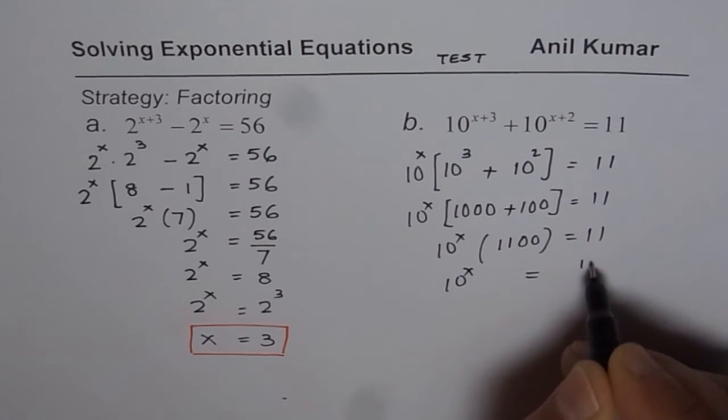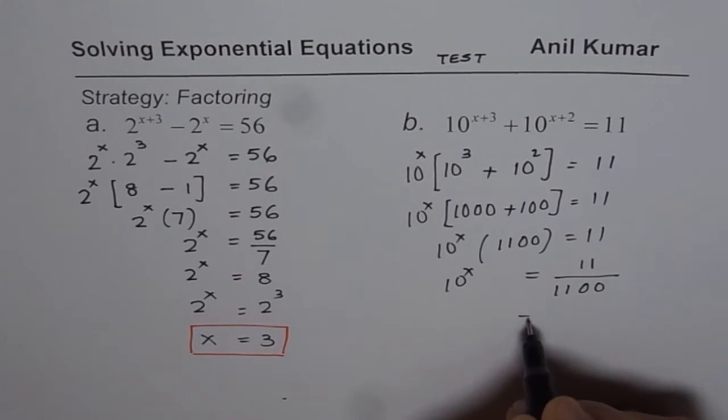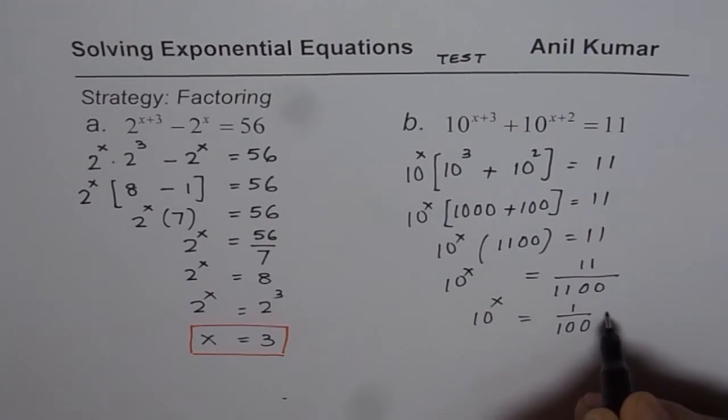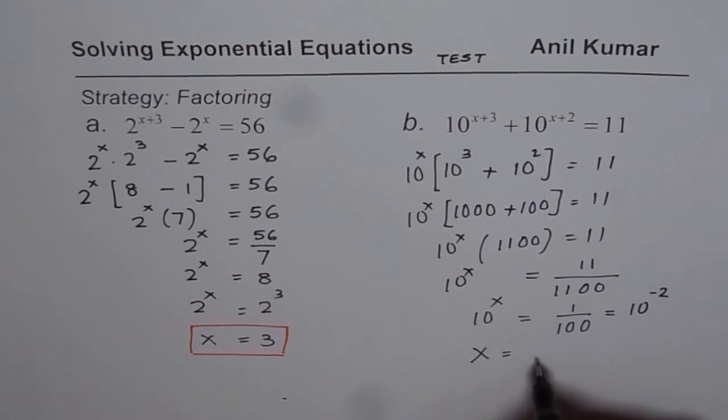So 10 to the power of x times 1100 equals 11. 10 to the power of x is 11 divided by 1100, or you can write this as 1 over 100, which is 10 to the power of x. 1 over 100 could be written as 10 to the power of minus 2. Therefore x equals minus 2.